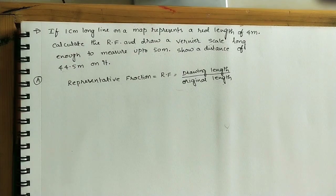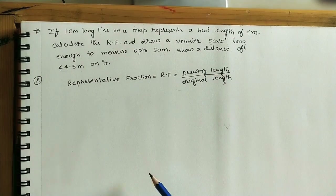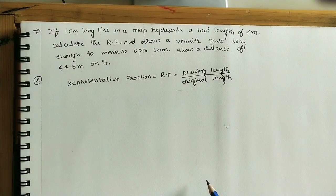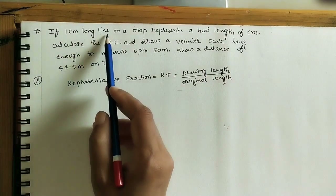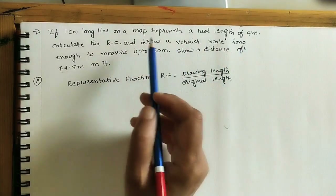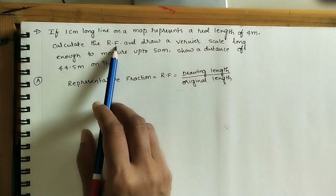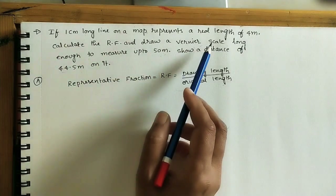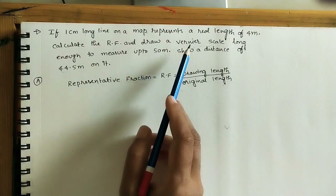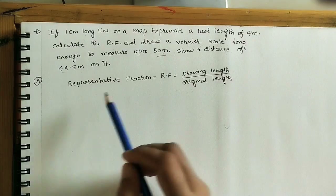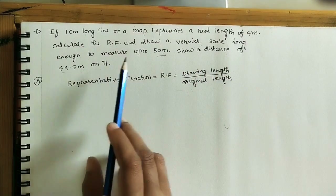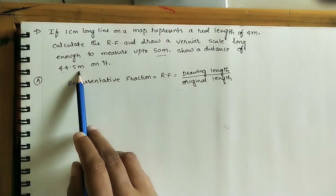Welcome to this class on how to construct a Vernier scale using given data. This scale is used for marking three consecutive units — for example, meters, decimeters, and centimeters. The given data states that one centimeter on a map represents a real length of four meters. We need to calculate the RF (representative fraction) and draw a Vernier scale long enough to measure up to 50 meters, and show a distance of 44.5 meters on it.